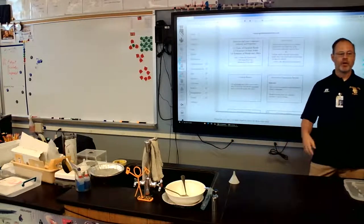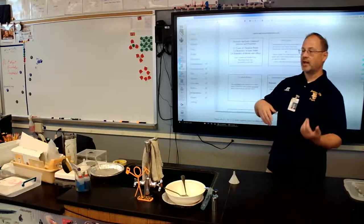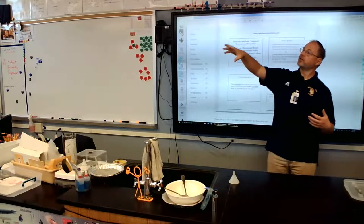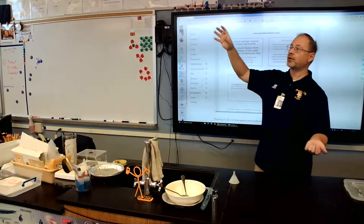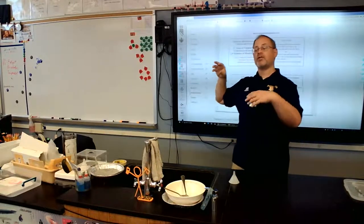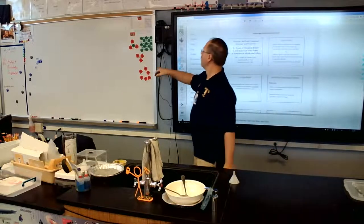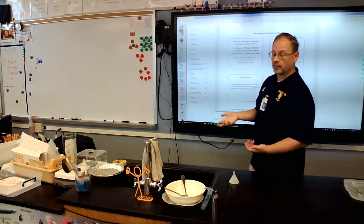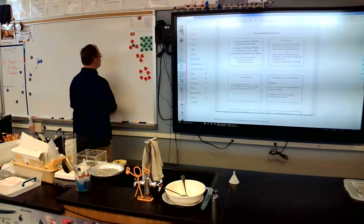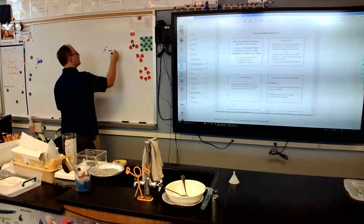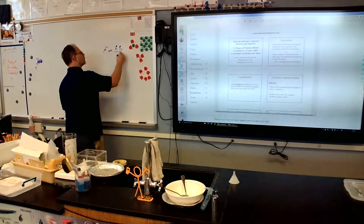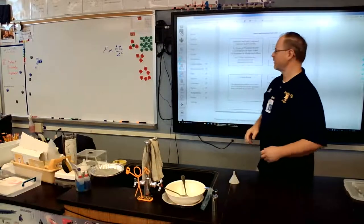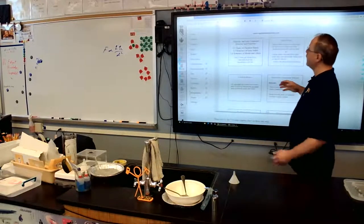We learned about ionic, covalent, and metallic bonds. Ionic bonds are formed when electrons are taken from one atom and given to another — that creates ions which stick together. When a non-metal with very high electronegativity like chlorine takes an electron from an atom with very low electronegativity like sodium, they form ions held together electrostatically. Coulomb's Law tells us the force of attraction is equivalent to the charge of one times the charge of two, over the square of the distance between them.